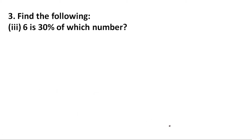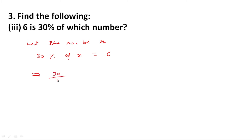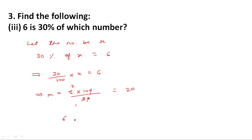Next question: find the following — 6 is 30% of which number? Let the number be x. From the question, 30% of x is equal to 6. This implies 30 upon 100 multiplied by x is equal to 6. This implies x is equal to 6 into 100 divided by 30, with zeros cancelling, giving x equal to 20. Therefore 6 is 30% of number 20.